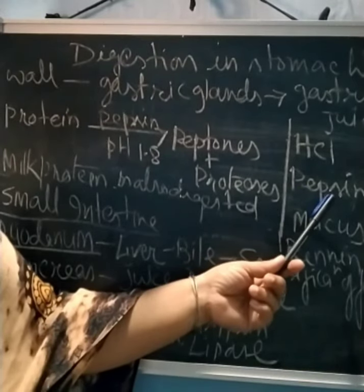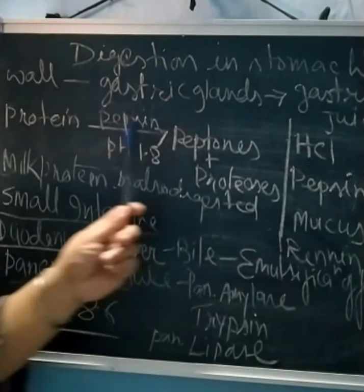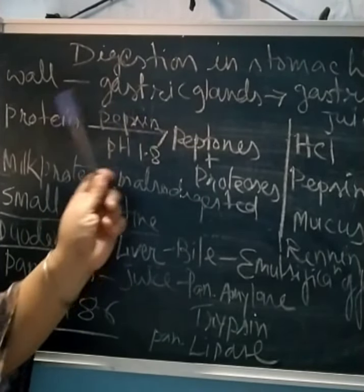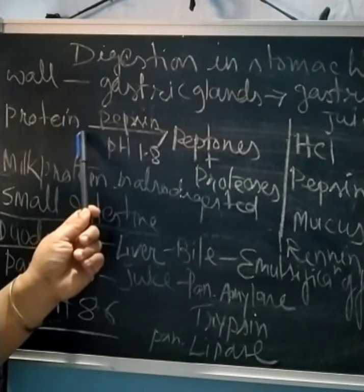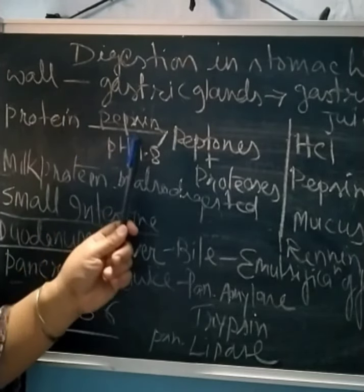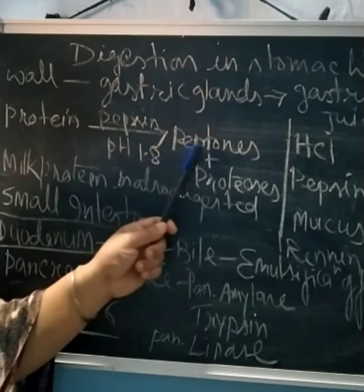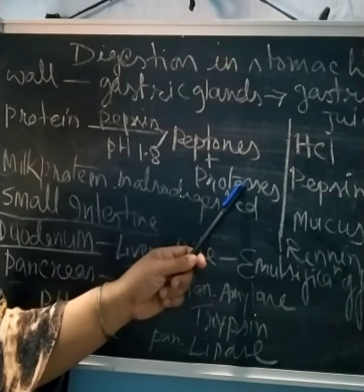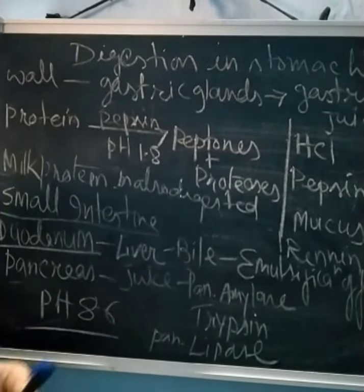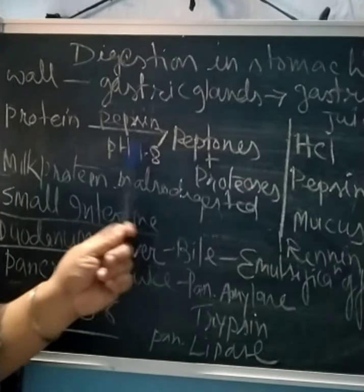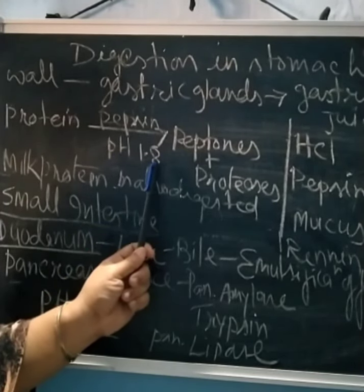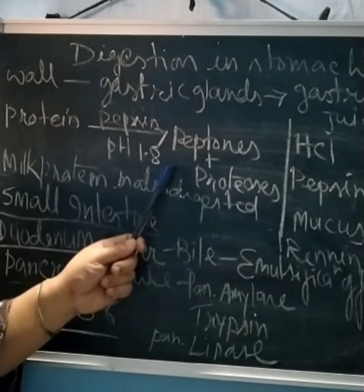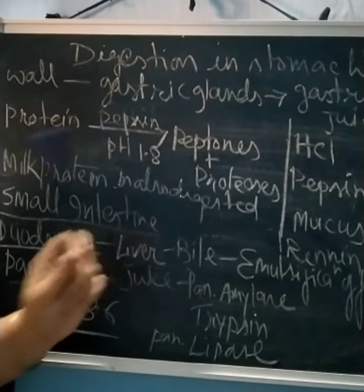When pepsin becomes active, it partially digests proteins from our diet, forming two intermediate compounds called peptones and proteoses. This occurs at pH 1.8, which is highly acidic.